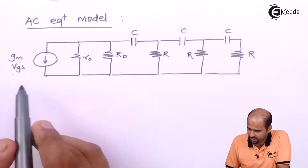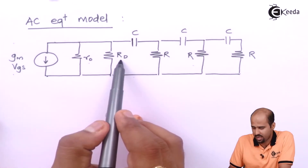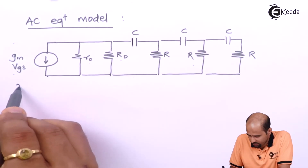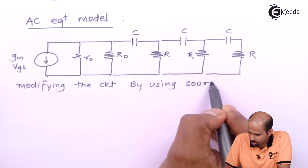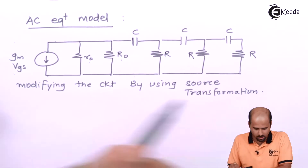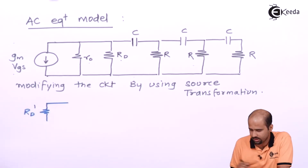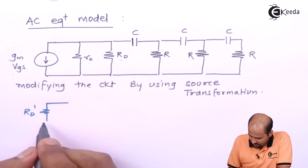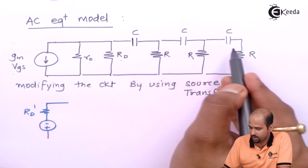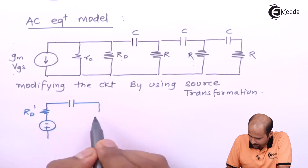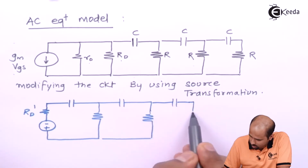Whatever I have formed gives me 1, 2, 3, 4, 5 loops. I want to reduce that, so RO and RD will be in parallel, and with that I can do the source transformation. Modifying the circuit by using source transformation, my circuit will look like RD-dash, which is nothing but the parallel combination of RD and small RO. Then we will have a voltage source, and then 1, 2, and 3 loops.